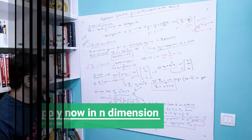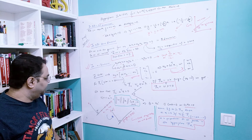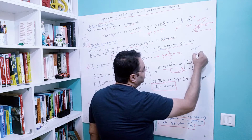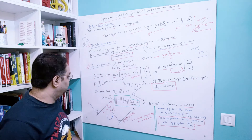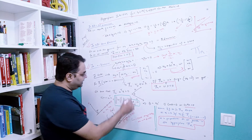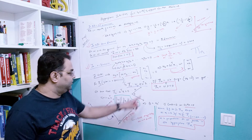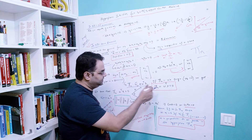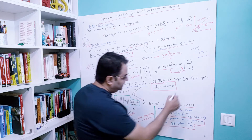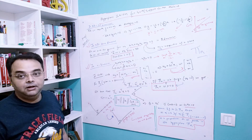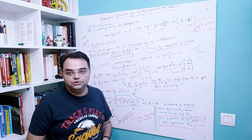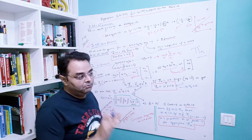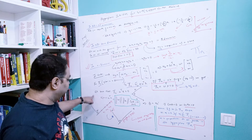So in n dimensions we can define a plane — denoted by the symbol Π(n) — as w0 + w^T·x = 0. As a special case, if w0 = 0, meaning the plane always passes through the origin, the generalized equation simplifies to w^T·x = 0. This is the case when w0 equals zero.